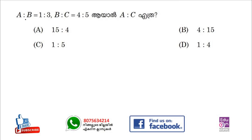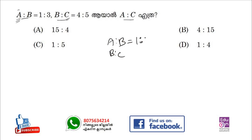The first question: A is to B and B is to C — find A is to C. A is to B is to C — 1, 2, 3. The answer: B is to C is 4 is to 5.